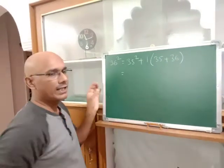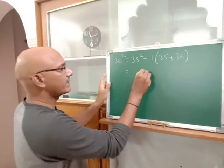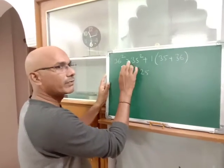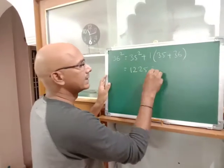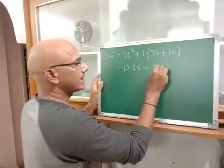35 squared: the ones place, 5 squared equals 25. For the tens, 3 times 4 equals 12 hundreds. So 1225 plus 35 plus 36, which equals 71.